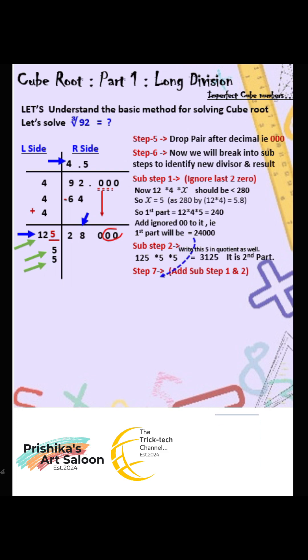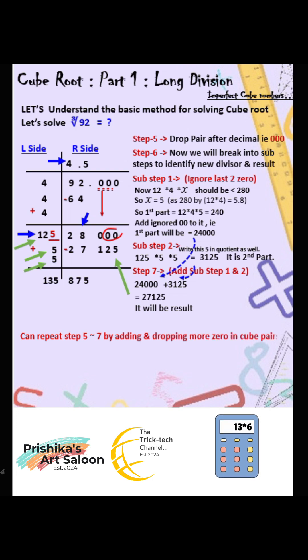Step 7: Add sub step 1 and 2. 24,000 plus 3,125 equals 27,125. It will be result. Can repeat step 5 to 7 by adding and dropping more zero in cube pairs to get answer in more places after decimal.